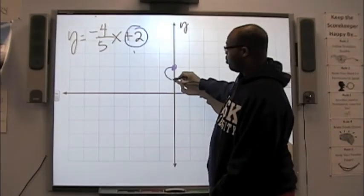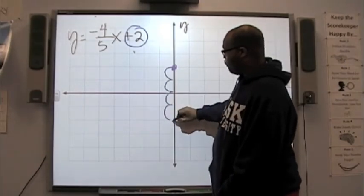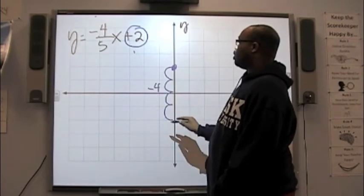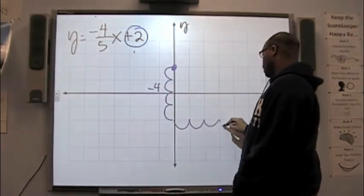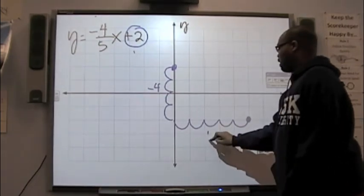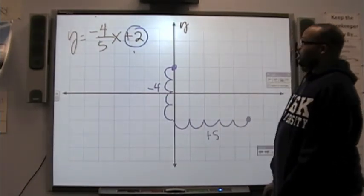So, we use a slope of negative 4 over 5. The negative 4... Now, remember, if we have a negative fraction, you can assign the negative to any part of the fraction you want, the numerator or the denominator. I'm going to go down four spaces. 1, 2, 3, 4. That's my negative 4. Then I'm going to go to the right five spaces. 1, 2, 3, 4, 5. That's my positive 5.